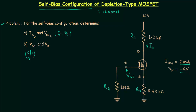To find ID and VGS we need two curves: the transfer characteristics of the N-channel D-MOSFET and the load line of the network. If you remember the self-biased configuration of JFET, we followed two approaches — mathematical and graphical. In this problem we will follow the graphical approach, plotting the transfer curve and the load line to obtain the operating point.